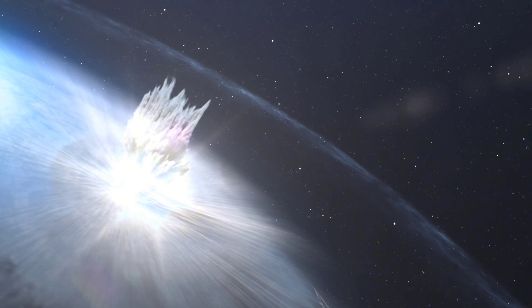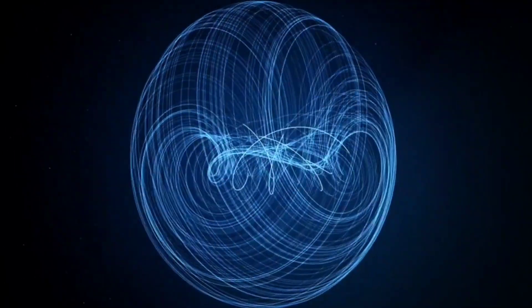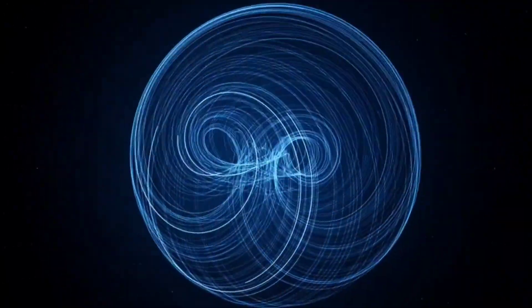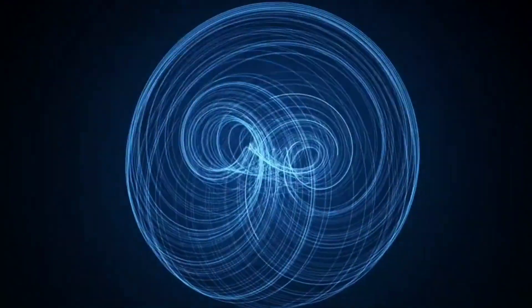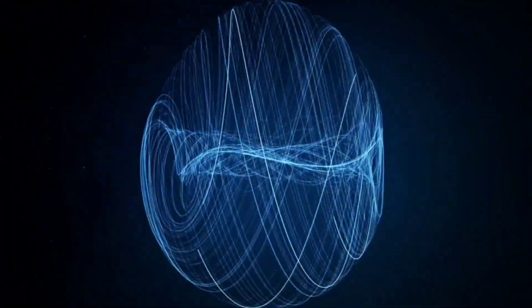The D3D facility uses a device known as a tokamak, a donut-shaped chamber surrounded by powerful electromagnets to confine superheated plasma.